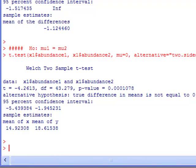Again, in this case I get a t-value that's negative 4.26, degrees of freedom of 43.279, and the reason you're getting this is it's using the Satterthwaite or Welch approximation to the degrees of freedom. If you don't know what that means, then you should go look it up. That's what the default is in R.